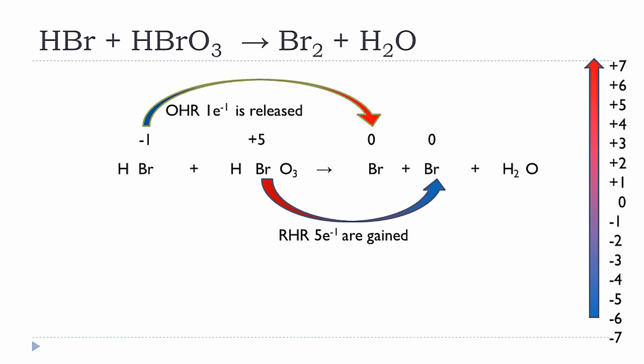In redox reactions, the electrons required for reduction are produced by the oxidation half-reaction. In this case the oxidation half-reaction only produces one mole of electrons, but we need five. To balance, we multiply the oxidation half-reaction by five, making five moles of electrons, which now equals the five moles of electrons needed for reduction. This also gives a coefficient of five for HBr.